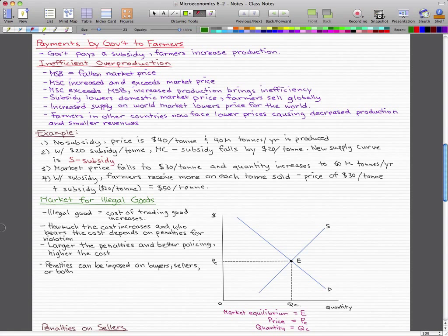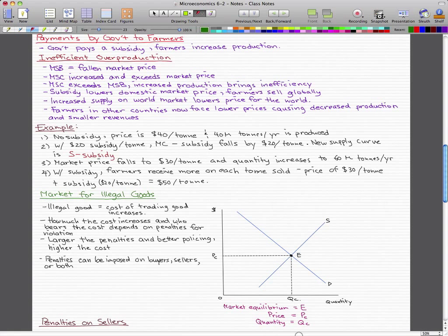An illegal good pretty much means that the cost of trading that good increases. How much the cost increases, and who actually bears the cost, depends on the penalties for valuation. The larger the penalties and better the policing around that illegal good, then the higher the cost. The penalties can be imposed on buyers, sellers, or both. We're going to start off here with a normal market, or we could say we're going to look at a free market and see how the changes occur when the good is made illegal.